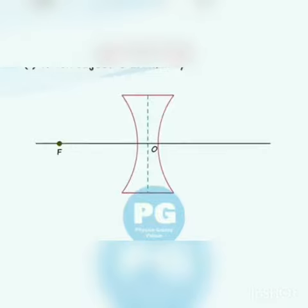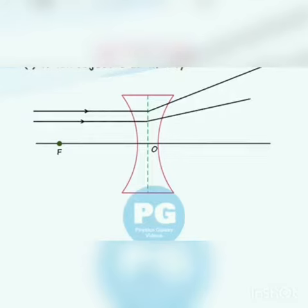First of all we can see the object kept at infinity in front of a concave lens. The parallel rays from the object will come and touch the lens. It will get diverged because concave lens is a diverging lens.